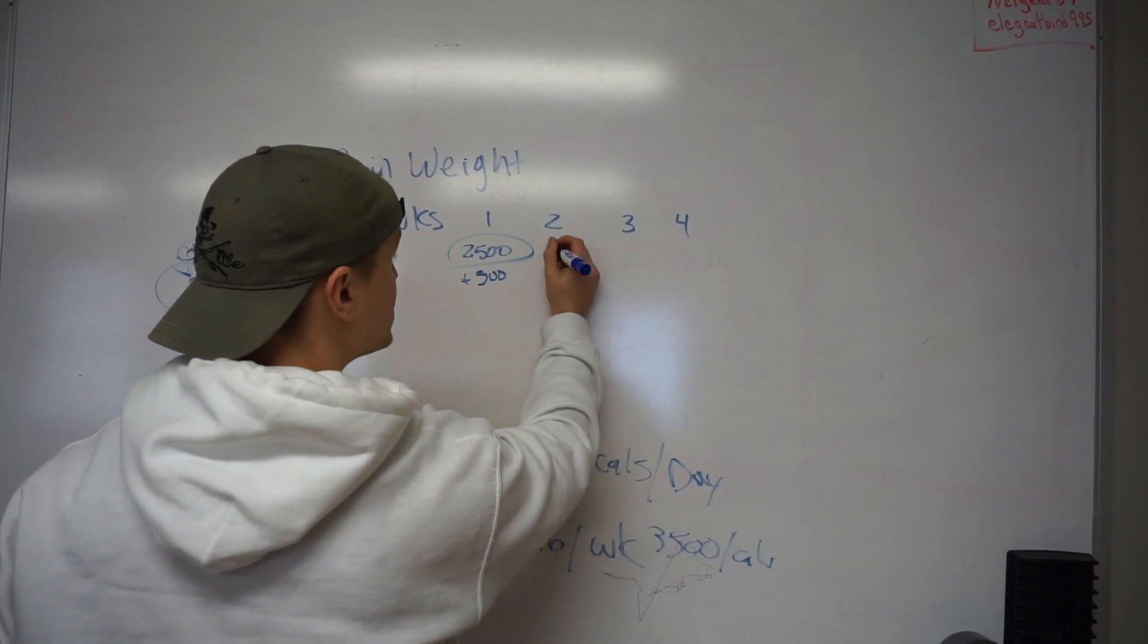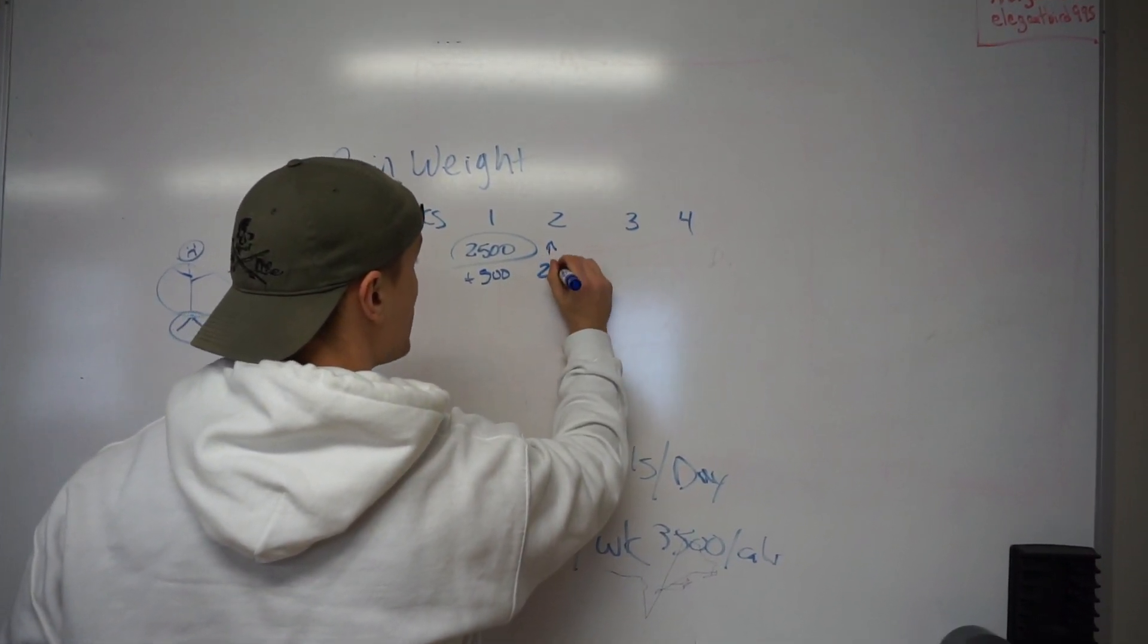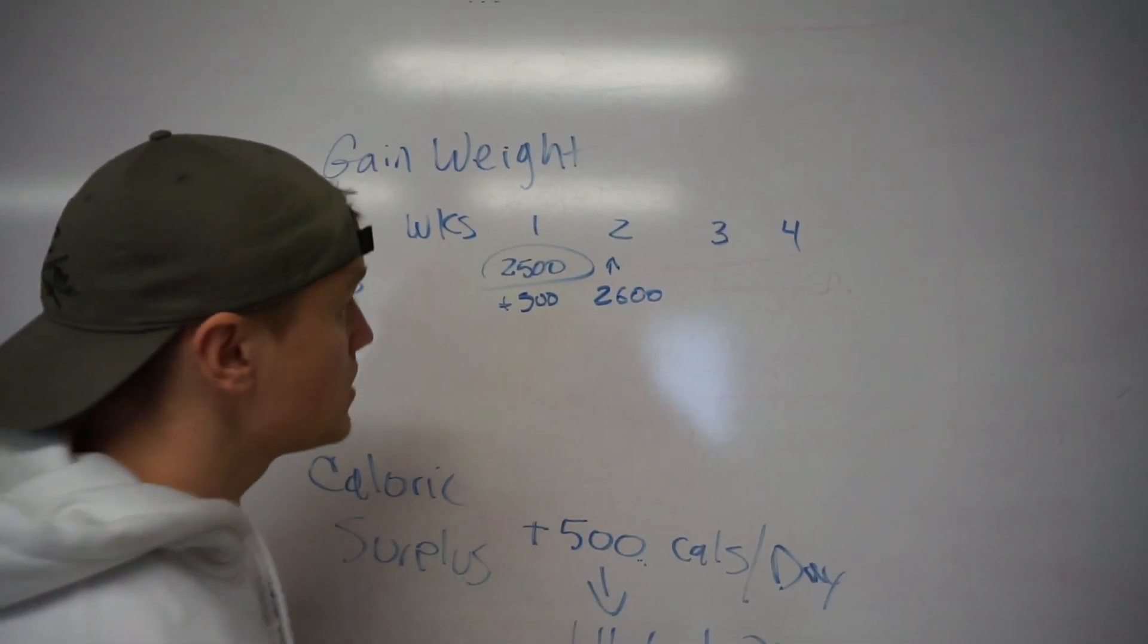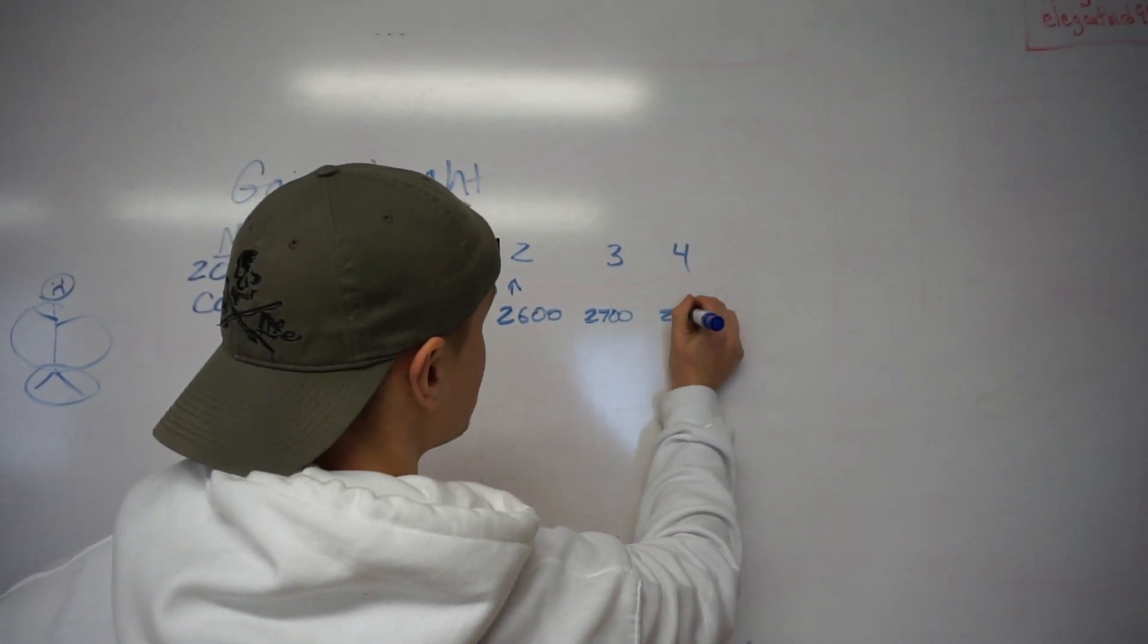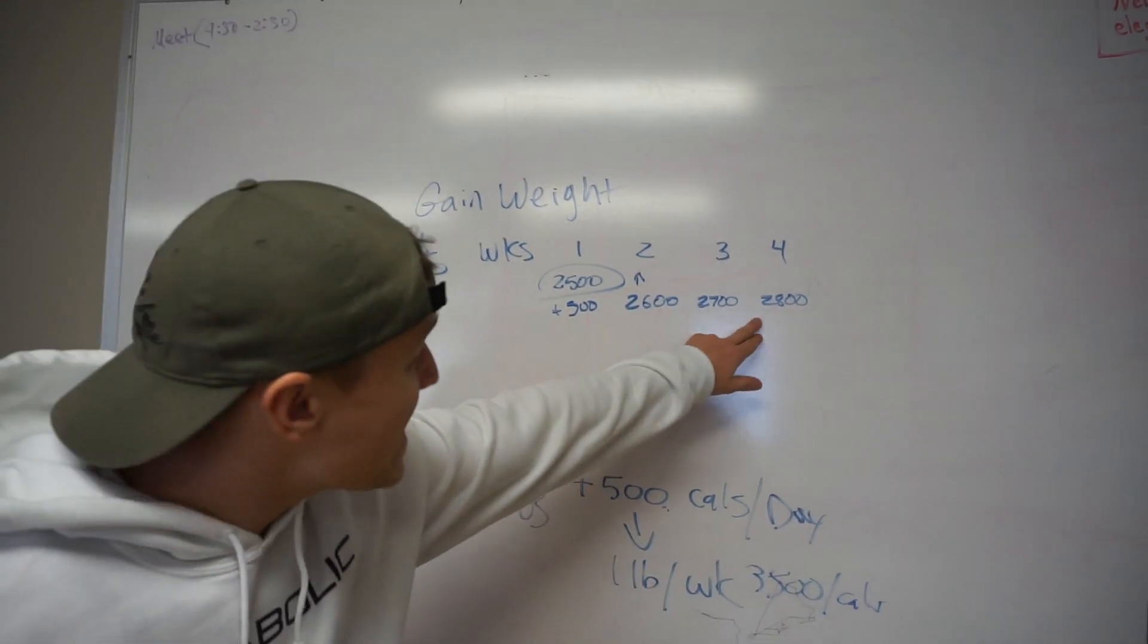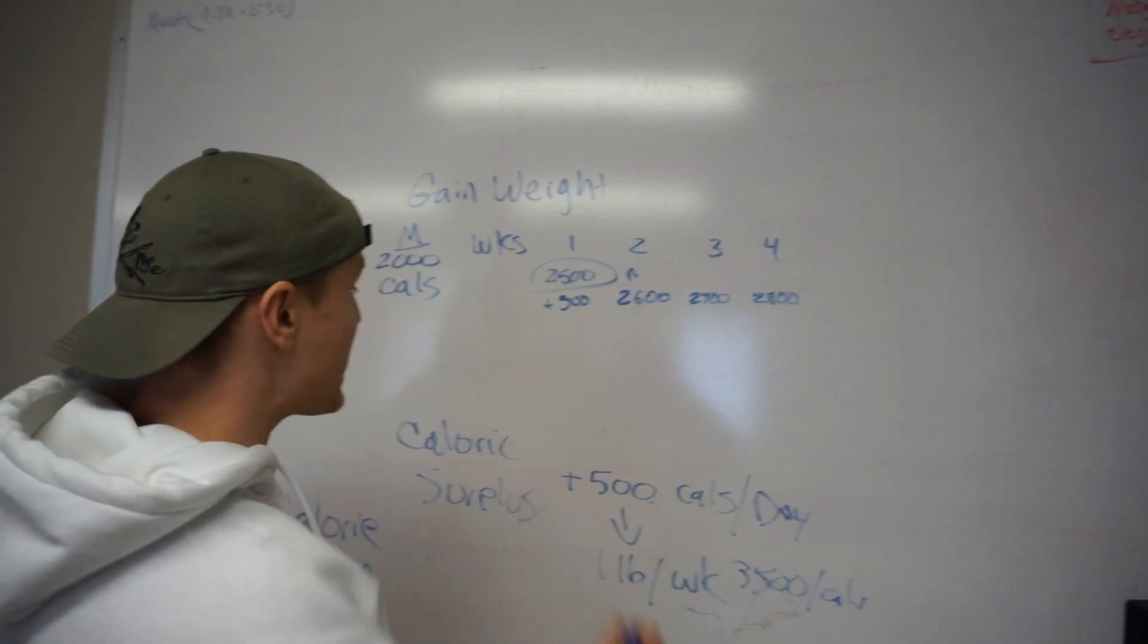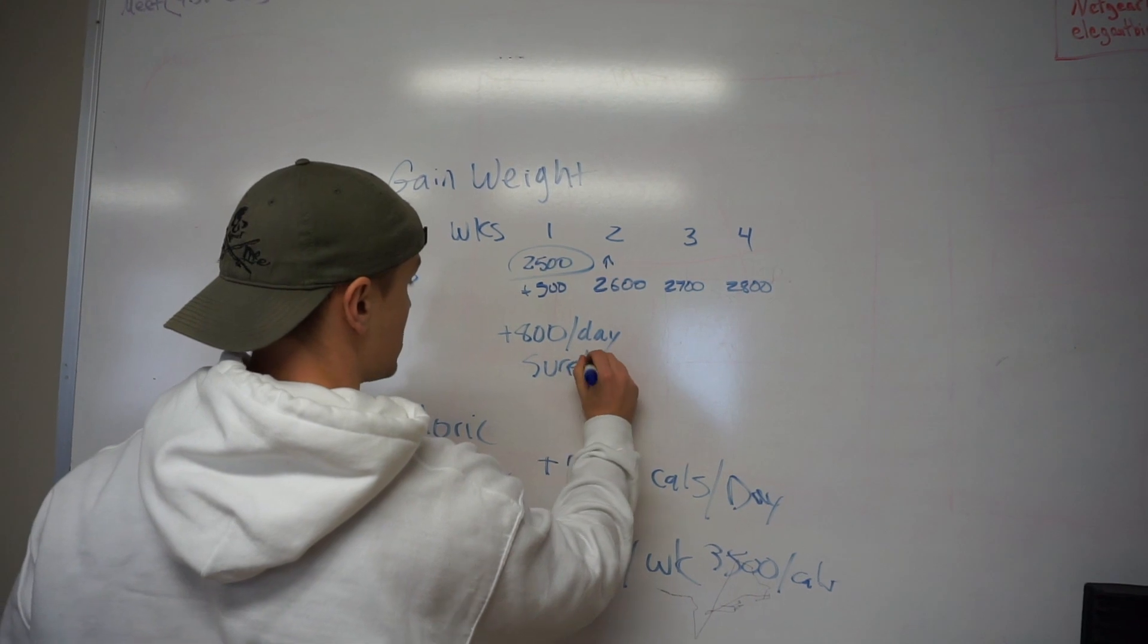So now the next week, week two, we want to increase. Now let's say we're up to 2,600 calories. Week three, 2,700 calories and 2,800 calories by week four. So that means by the end of week four, we're in an 800 a day surplus.